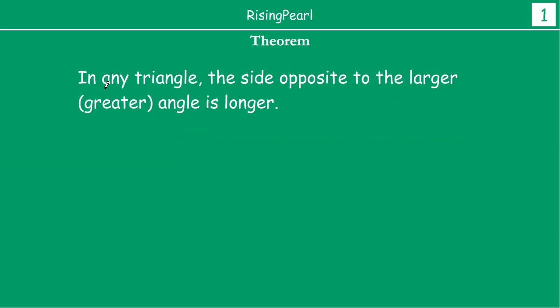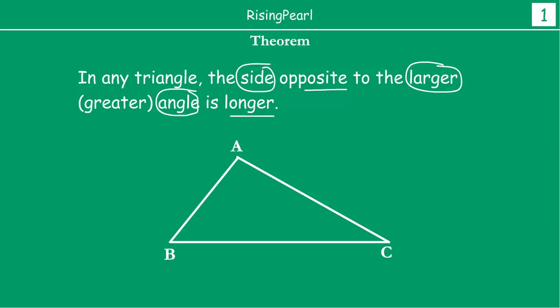The theorem tells us that the side which is opposite to the larger or greater angle, that side will be longer. So let us draw a triangle. This is our triangle, triangle A, B, C.